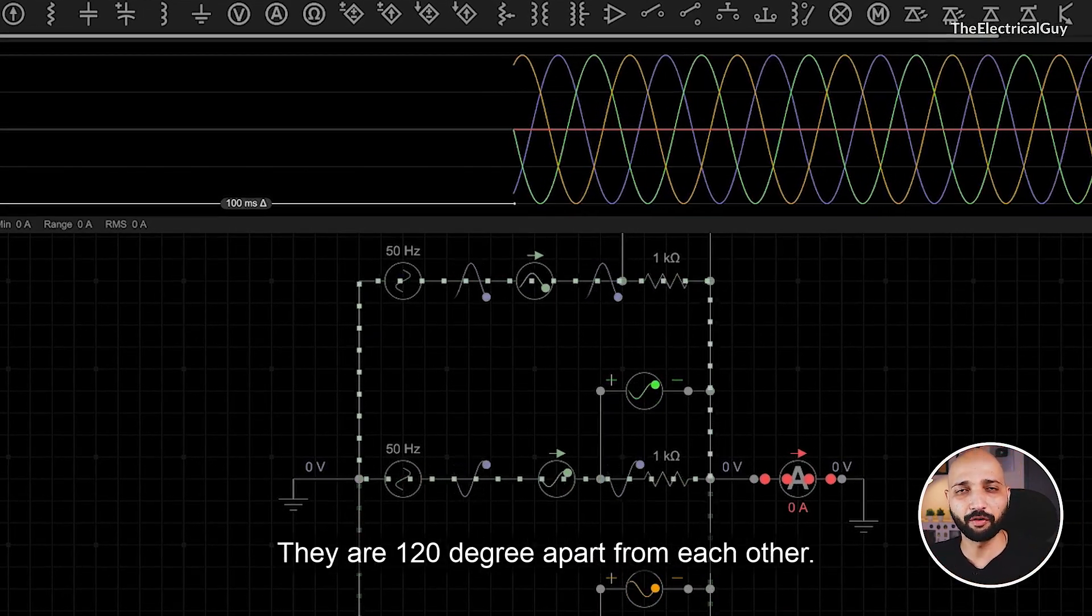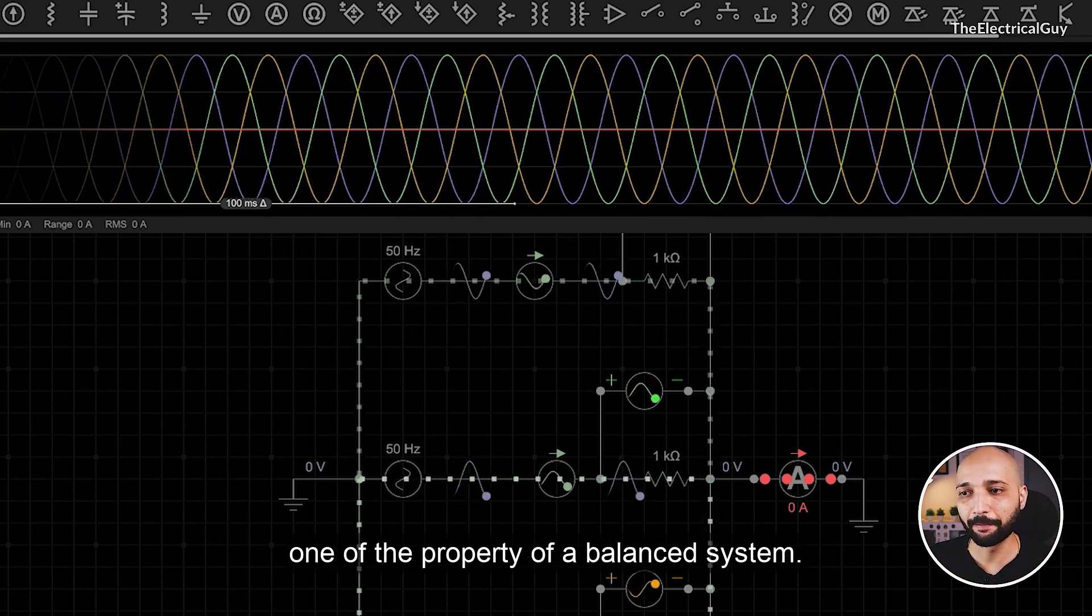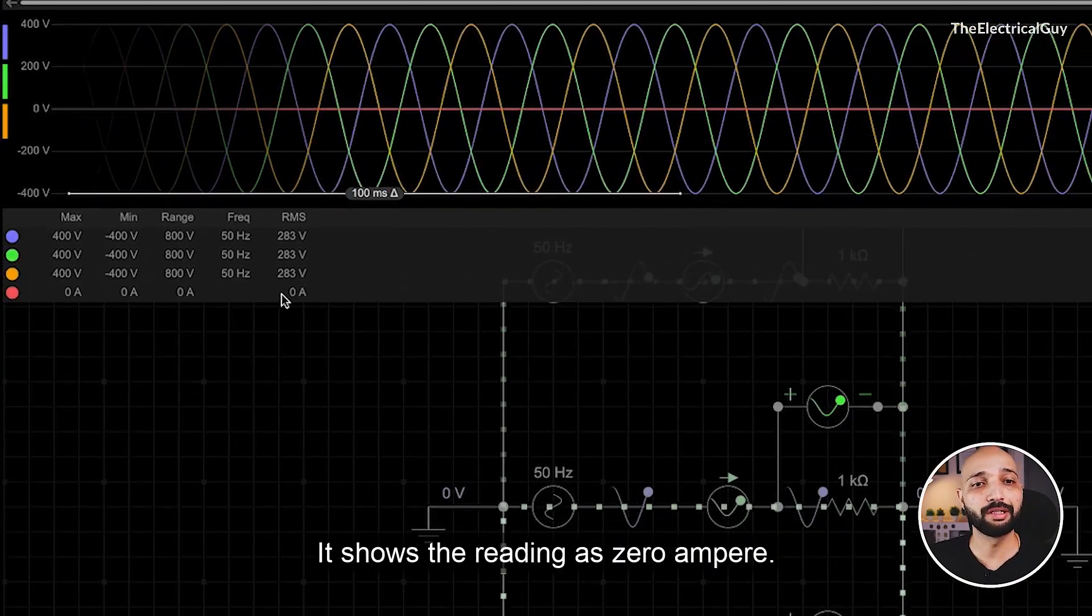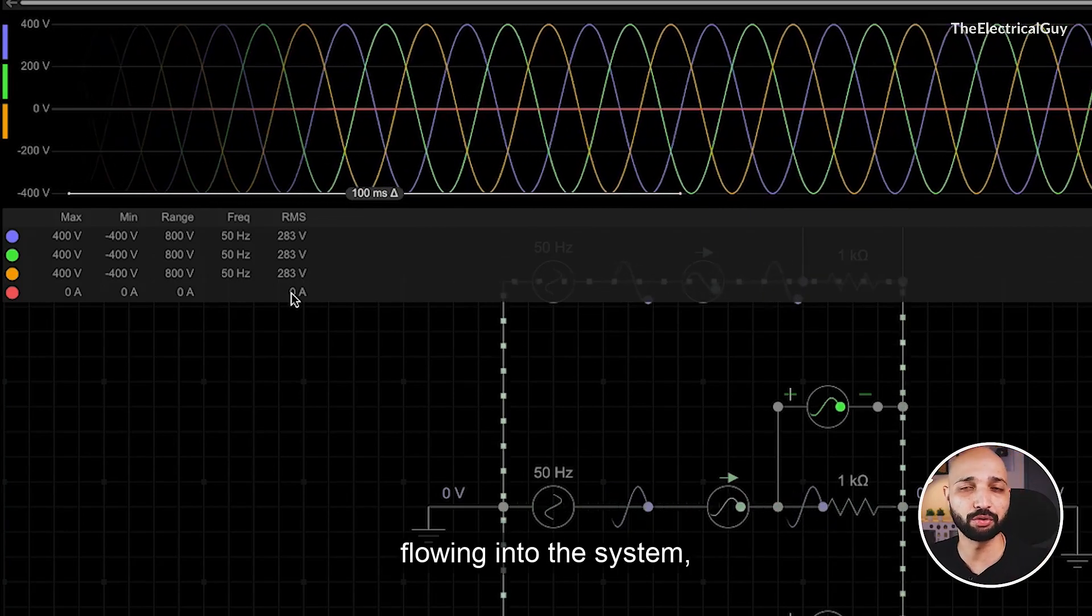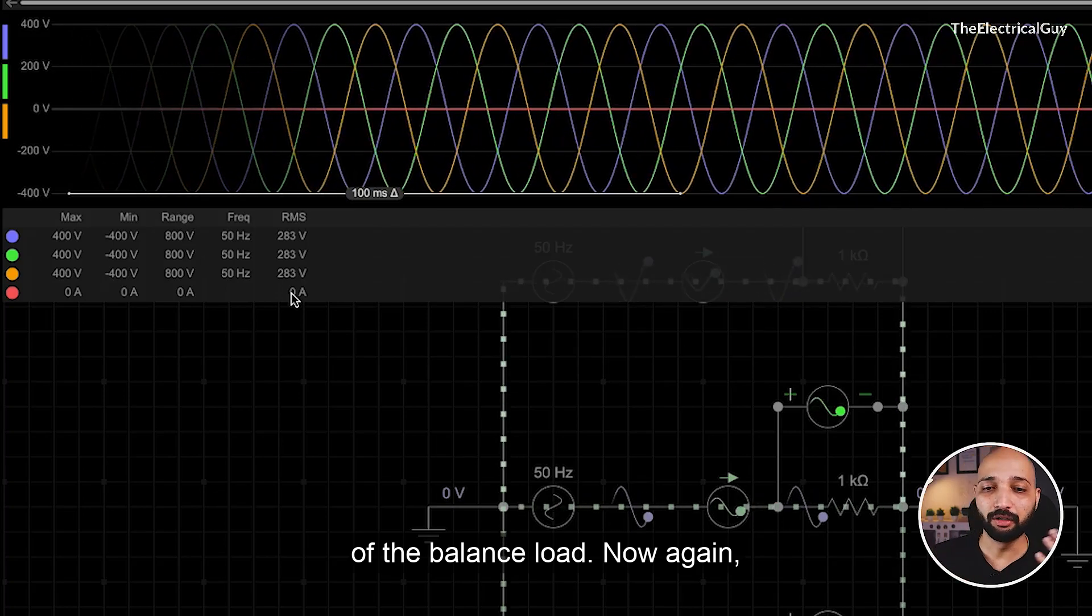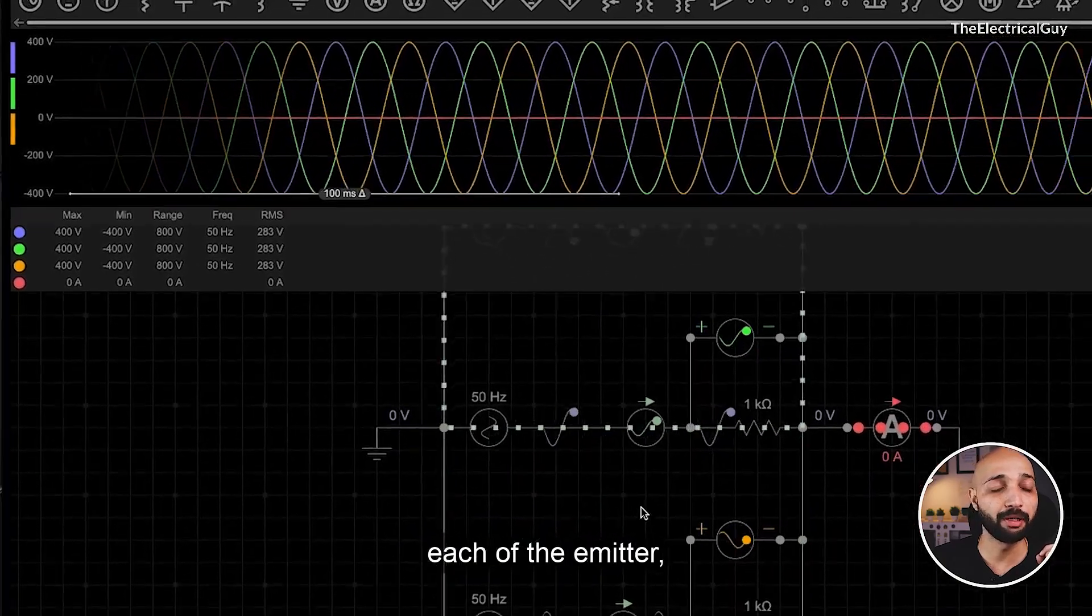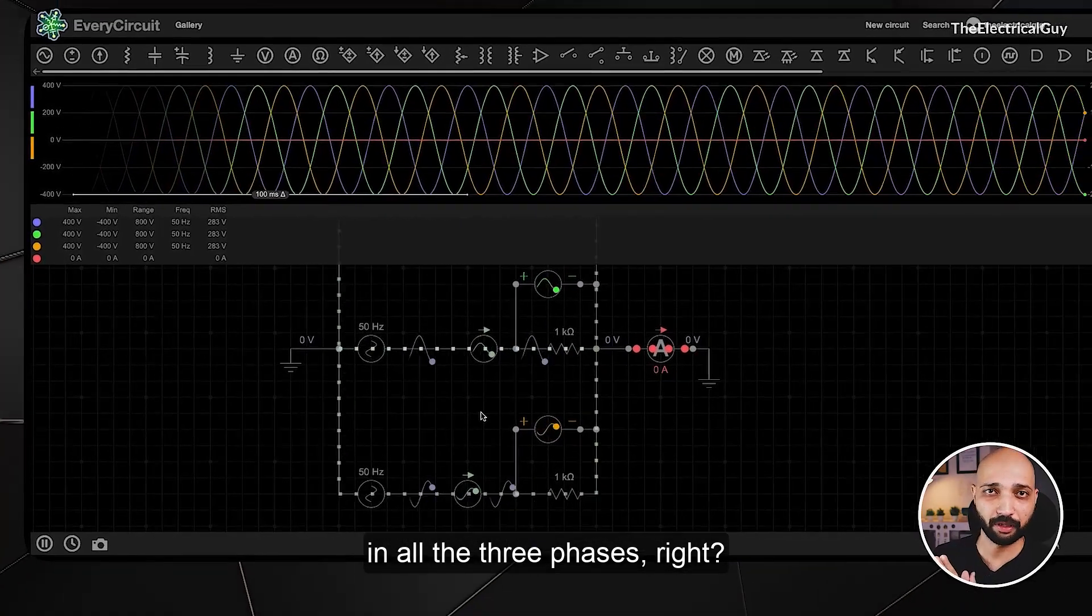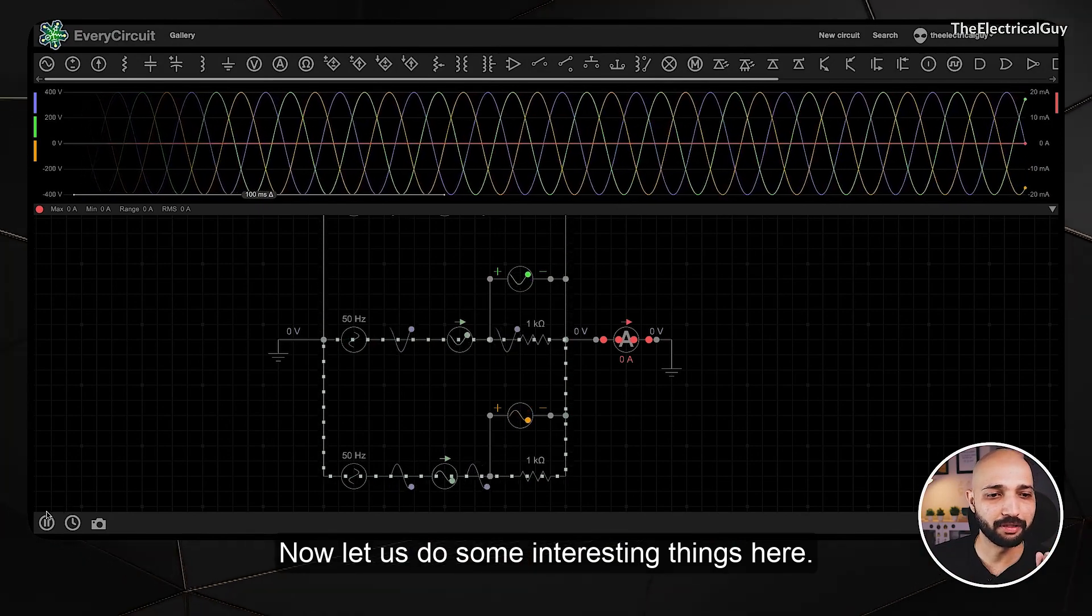They are 120 degrees apart from each other and hence it is a balanced system, which is one of the properties of a balanced system. The ammeter shows the reading as zero ampere, that means there is no current flowing into the neutral, which is the second property of the balanced load. If you check the current flowing through each ammeter, you will notice the current is also equal in all three phases. That is a balanced system.